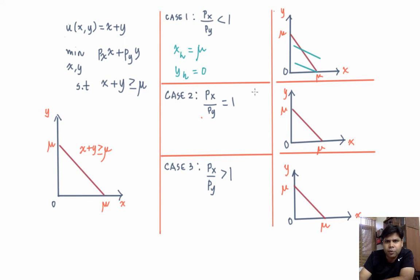Let's do the next case now, which is when px by py is equal to 1. So when px by py is equal to 1, if you want to plot the iso-expenditure curve, they'll have the same slope as this indifference curve. So the lowest possible iso-expenditure curve will actually coincide with this indifference curve x plus y equal to mu. So that would mean that anything on this line is a solution.